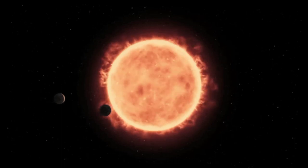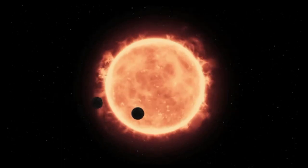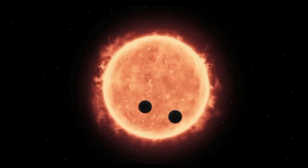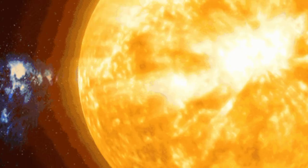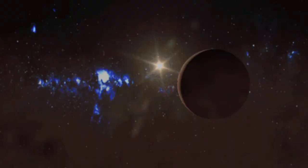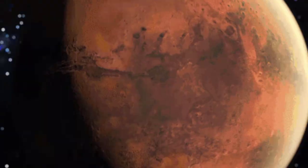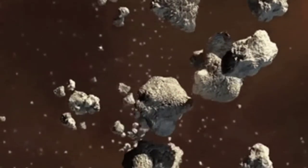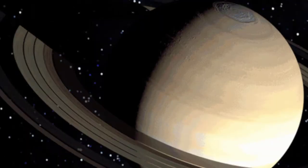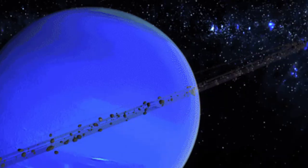Over time, the solar system became stable. The first four planets were rocky. They are today called Mercury, Venus, Earth, and Mars. The rest of the four were icy and gaseous with a small rocky core. They were Jupiter, Saturn, Neptune, and Uranus.